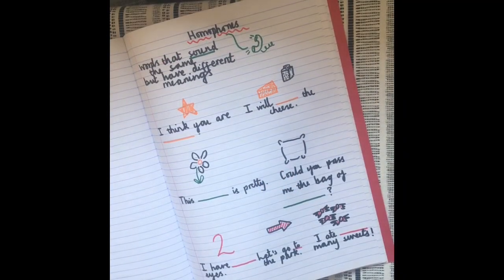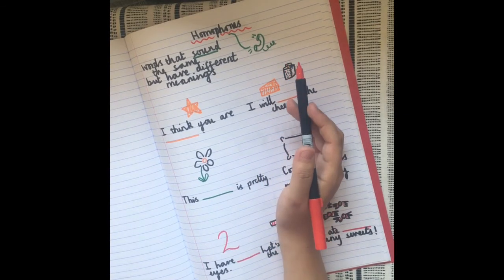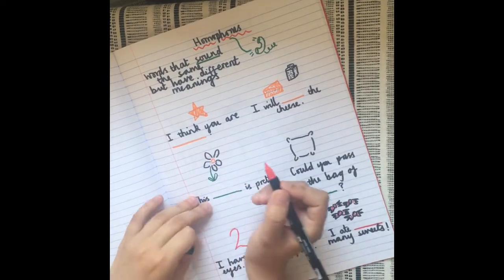Hi purple group! Okay, this week we're going to start off looking at homophones. Homophones are words that sound the same but they have different meanings. So I'm going to go through some examples now and then you can have a go at your worksheet.